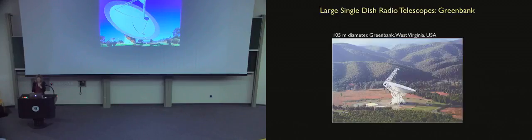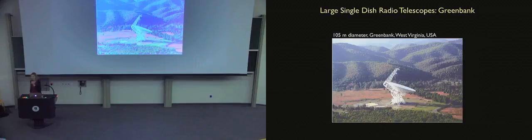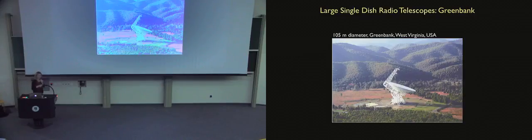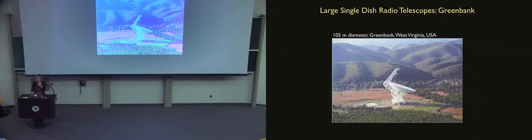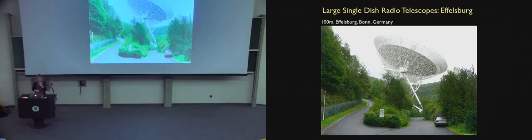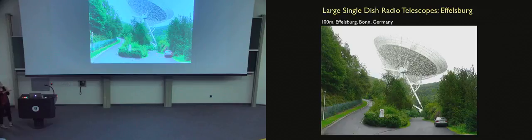Another very large telescope - the biggest steerable radio telescope on Earth - is the Green Bank Telescope, which is 105 meters in diameter. It has a special Gregorian offset design to maximize collecting area. Almost exactly the same size is the Effelsberg telescope in Bonn, Germany, which is also steerable. Here you can see it compared to the size of a car.